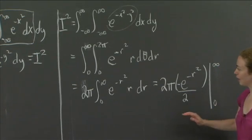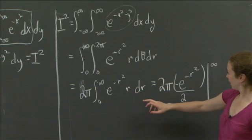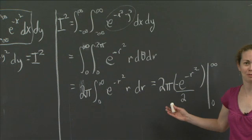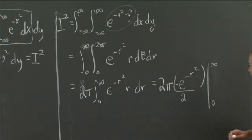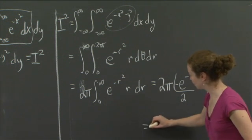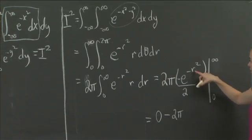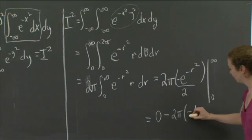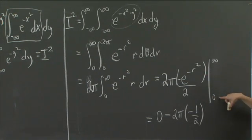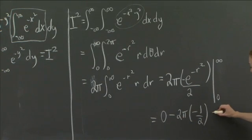This was much easier to evaluate using a substitution — let u equal r squared, for example. Evaluating at the bounds: as r goes to infinity, e to the minus r squared goes to 0, so the first term is 0. At r equals 0, e to the minus r squared is e to the 0 which is 1, giving negative one half. So we get 0 minus 2 pi times negative one half. The negatives cancel, the 2's divide, and the whole thing equals pi.